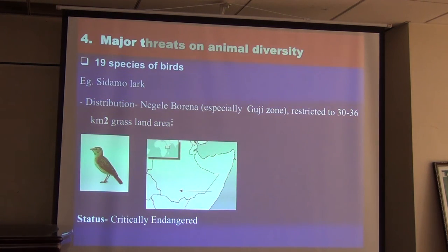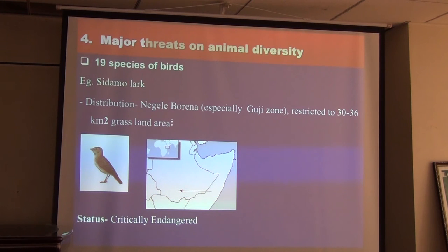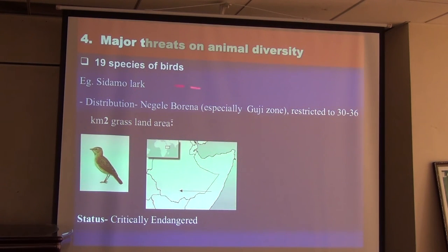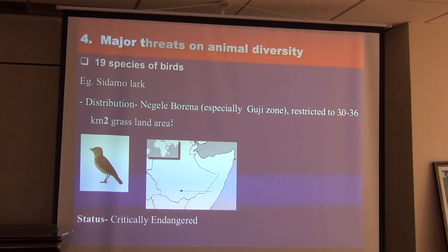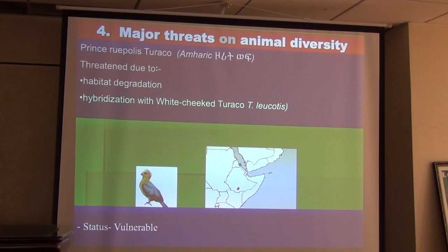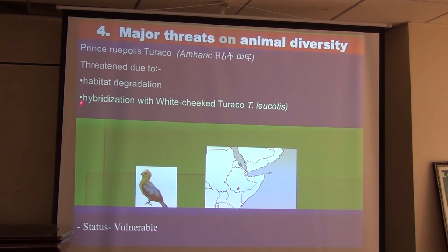Of the 926 bird species, 19 are threatened under different categories — endangered, critically endangered and others — by IUCN. For example, Sidamo Lark is distributed in the Negele Borena area and is restricted to a grassland area of 30 to 36 kilometers. Prince Ruspoli's Turaco is threatened due to habitat degradation and hybridization with the White-cheeked Turaco. Of 284 mammal species, 38 are categorized as endangered under different threat levels. The Ethiopian wolf has been listed as endangered in both 2008 and 2014 — the major threat being rabies, especially in Bale Mountain National Park.